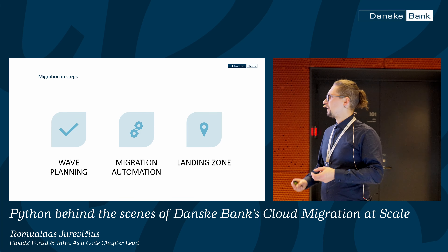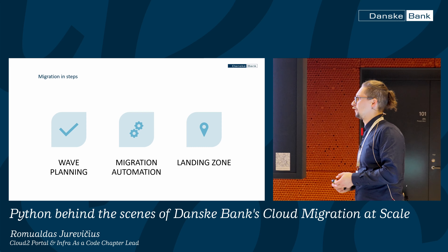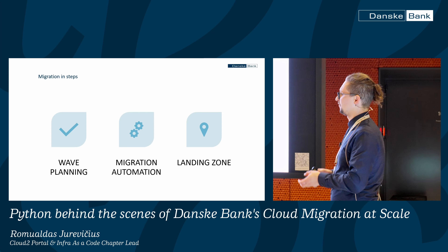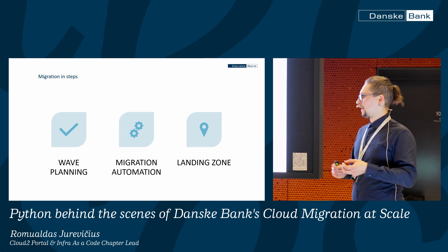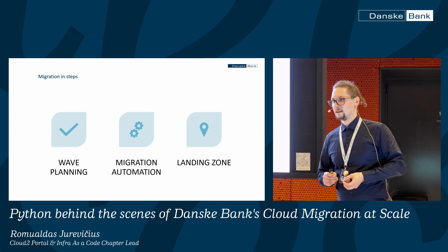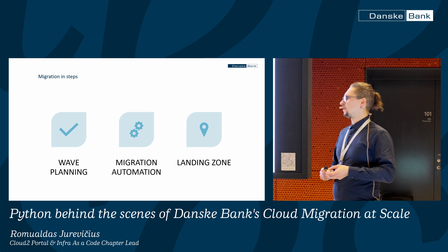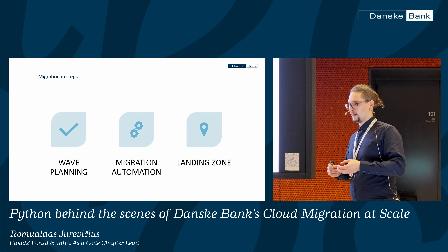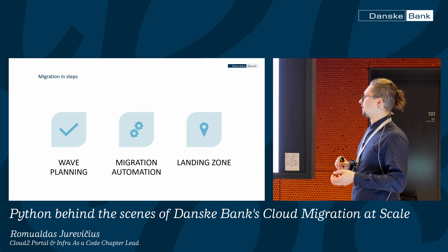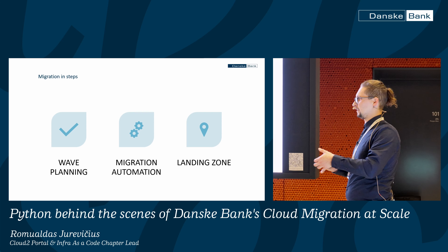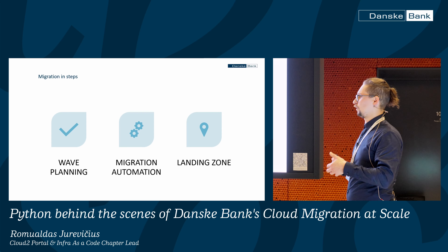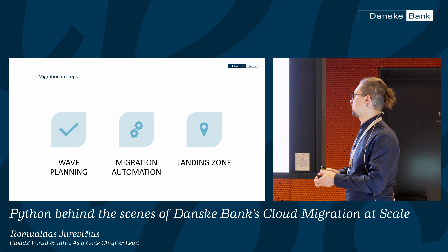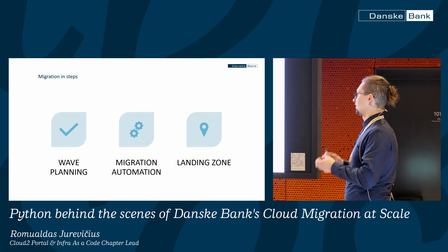We're executing this migration in three steps. Pragmatically: we're planning the waves, doing the migration automation, and everything falls into the landing zone. Wave planning is where we gather all the data about the infrastructure — all its relationships, what it connects to, what components it consists of — so we're building a large database we call the meta database. We take all this data from the meta database, put it into migration automation where we have a cutover tool to orchestrate the migration, and all the applications should eventually fall into the landing zone.